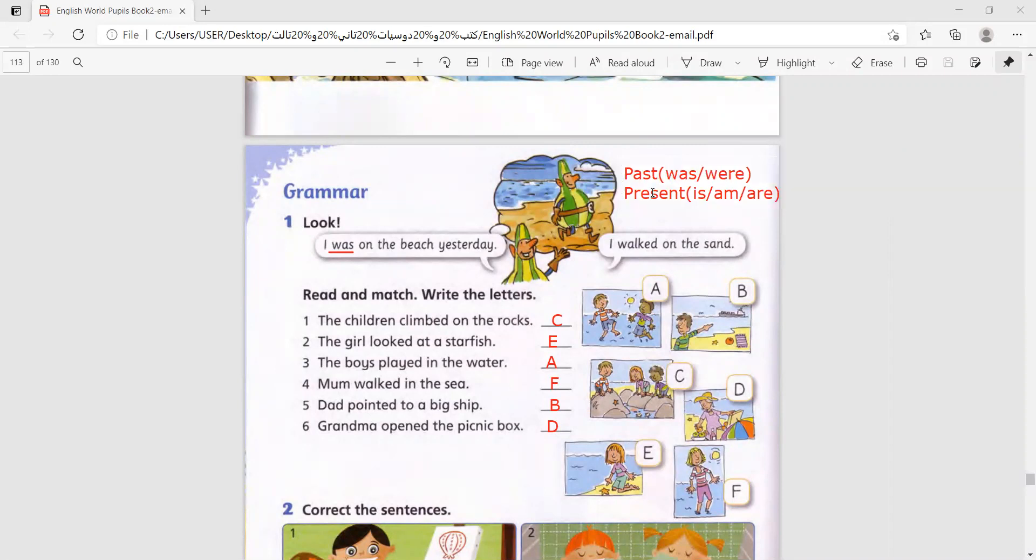We use past to talk about something that already happened, and present to talk about now. Past is for yesterday, a day ago, maybe a month or one year before, to talk about something that happened already. Present is to talk about something that is happening right now, a habit.